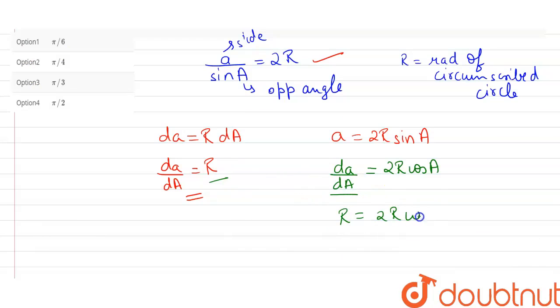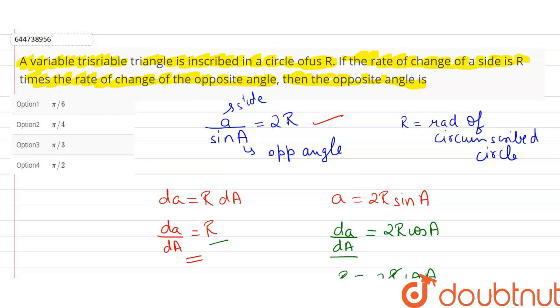So R equals 2R cos A. Canceling R, we get cos A equals 1/2. This implies that A, the opposite angle, equals π/3. Let's match the option - option 3 is correct.